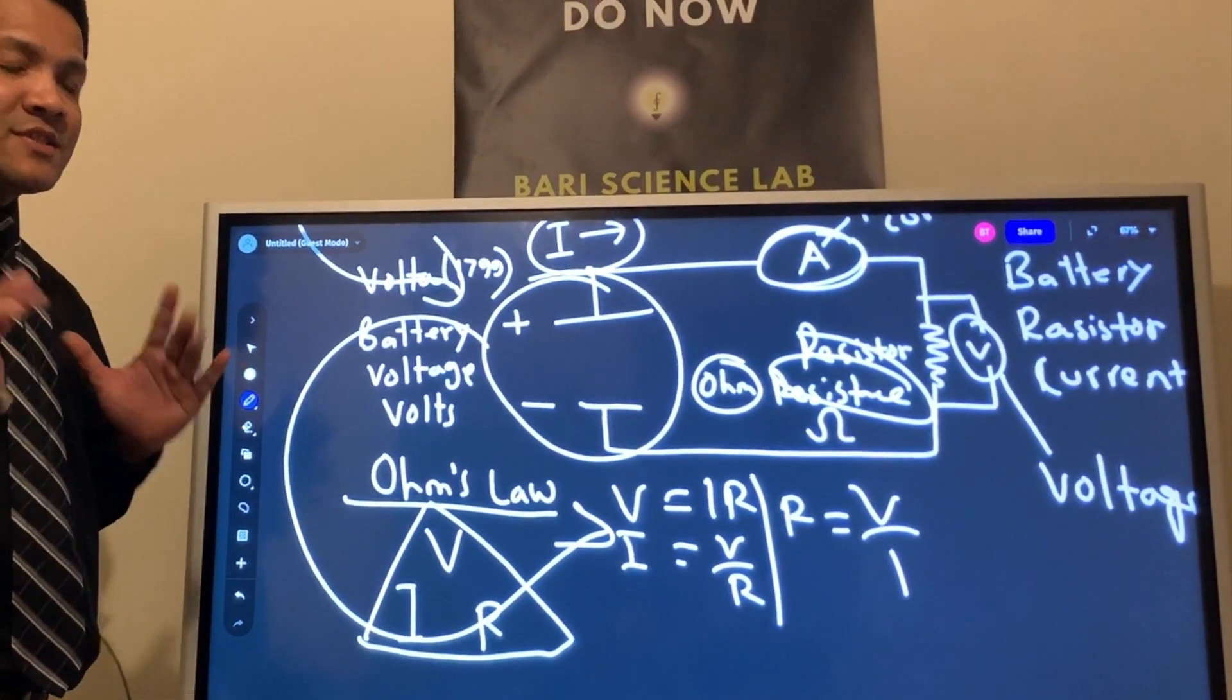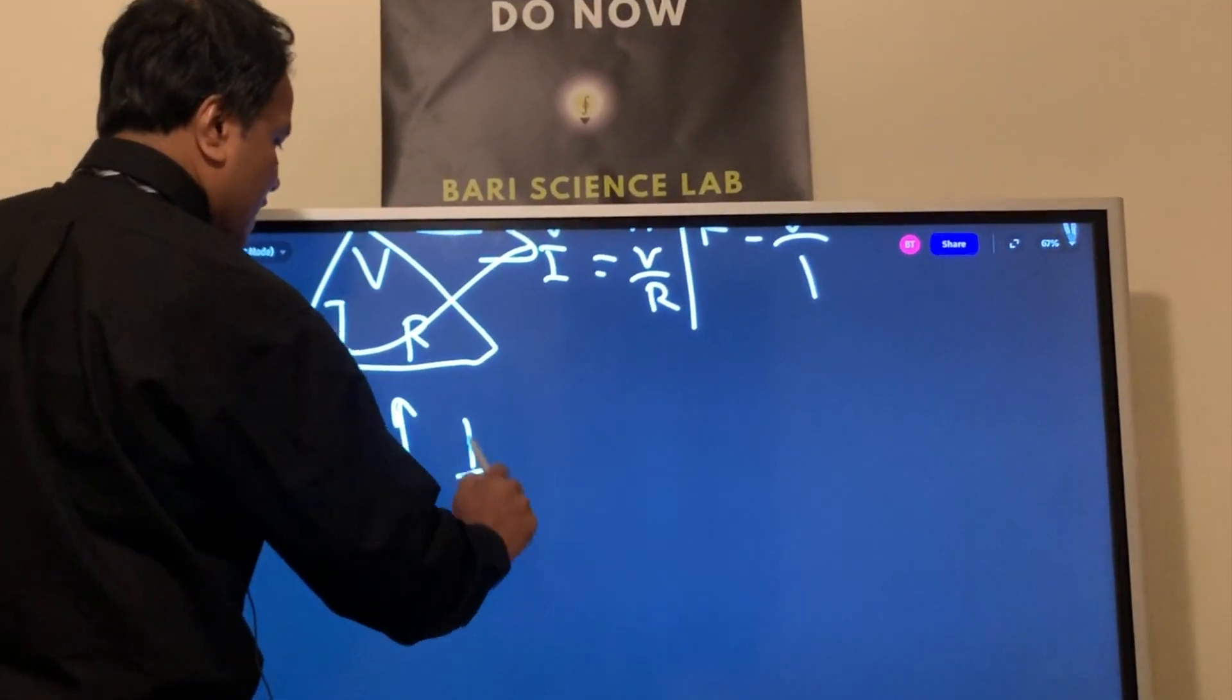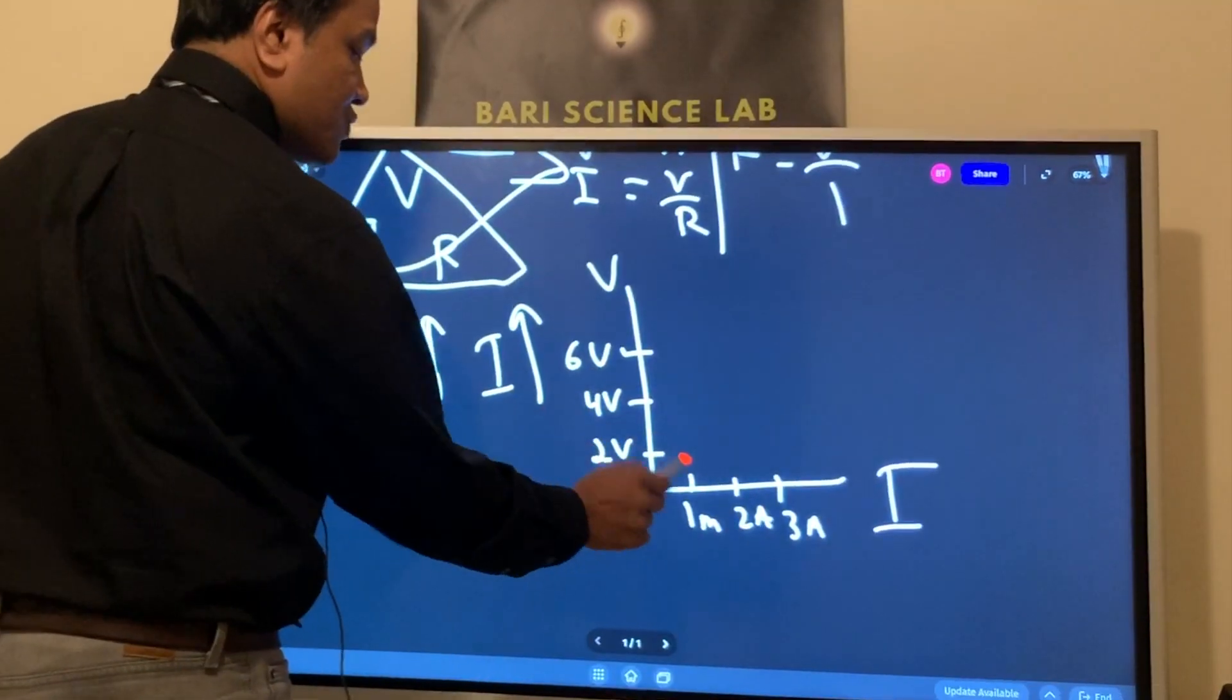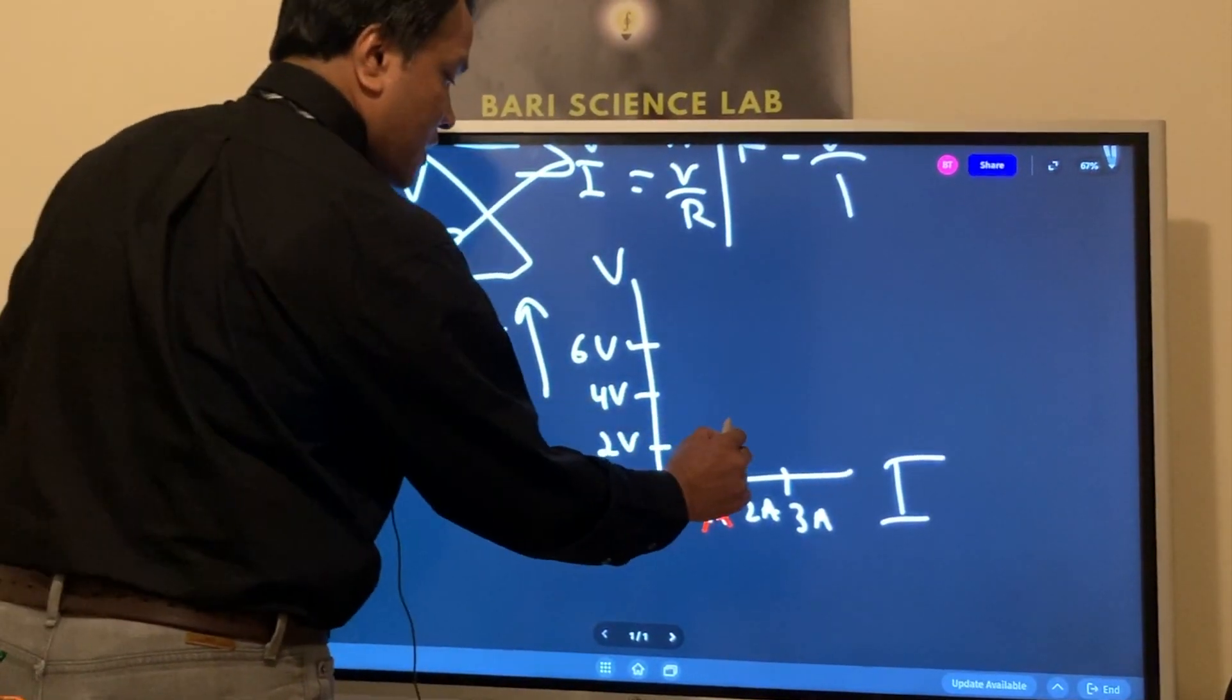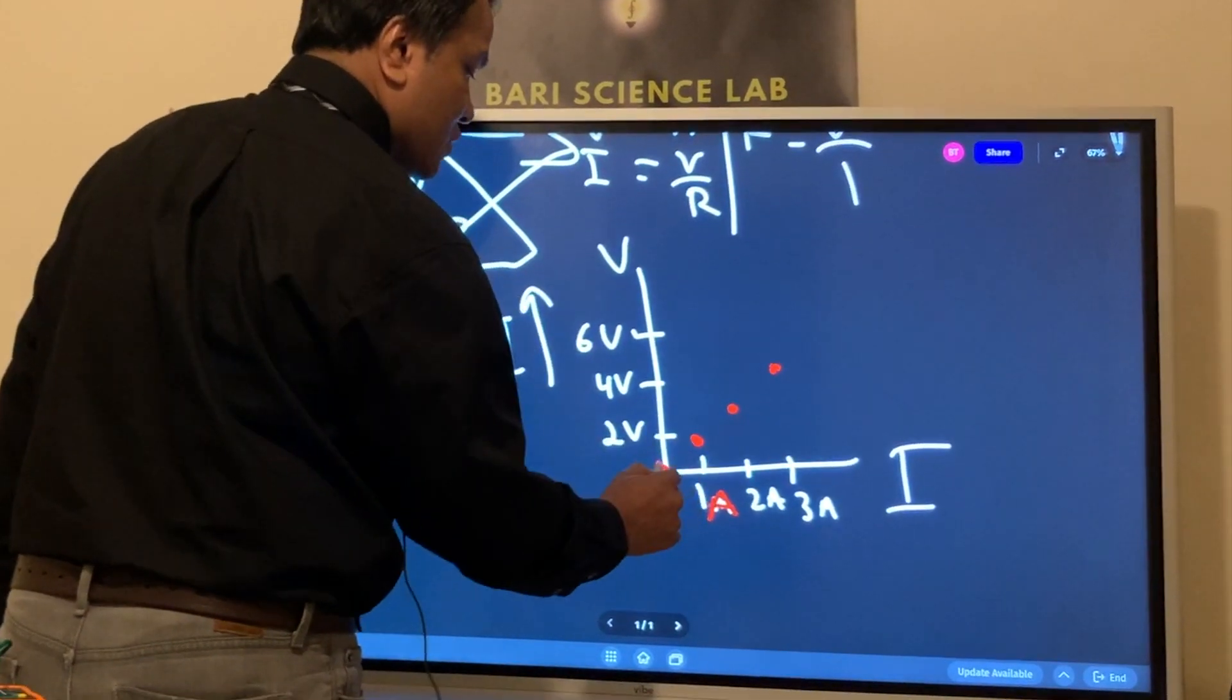Now we're going to try to understand the relationship. If voltage increases, then the current increases as well. Two volts, one amp. Four volts, two amps. Six volts, three amps.